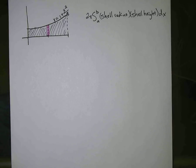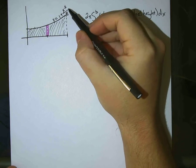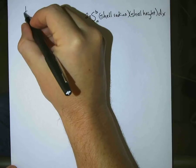Okay, so the problem we've got here is a shell method problem. We're going to be rotating this function here, y equals 1 plus x squared over 8, around the y-axis.